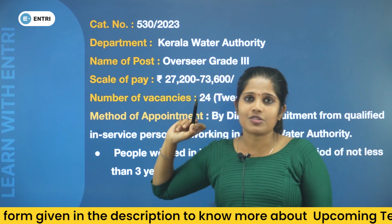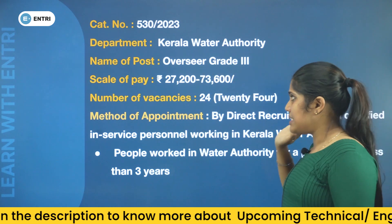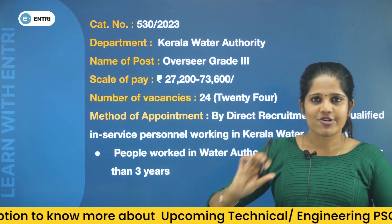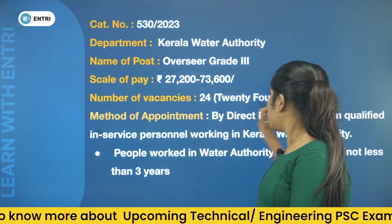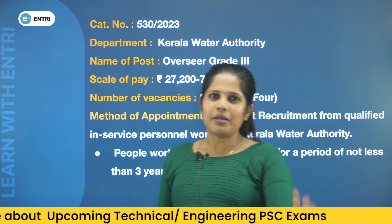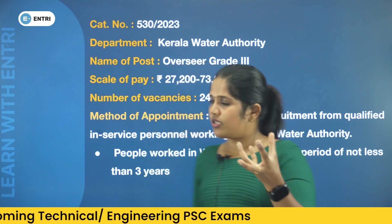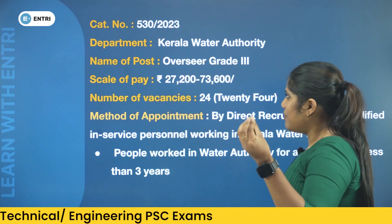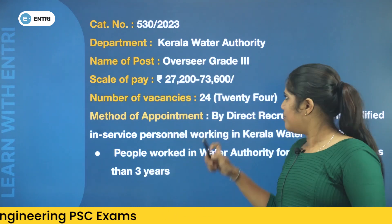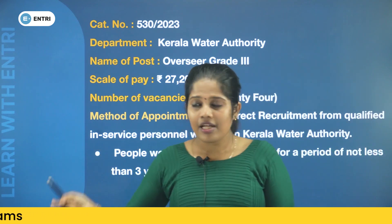The Scale of Pay is 27,200 to 73,600. We have 24 vacancies. Now we have a third grade officer in Water Authority. We have already received an exam notification. We have 24 vacancies.